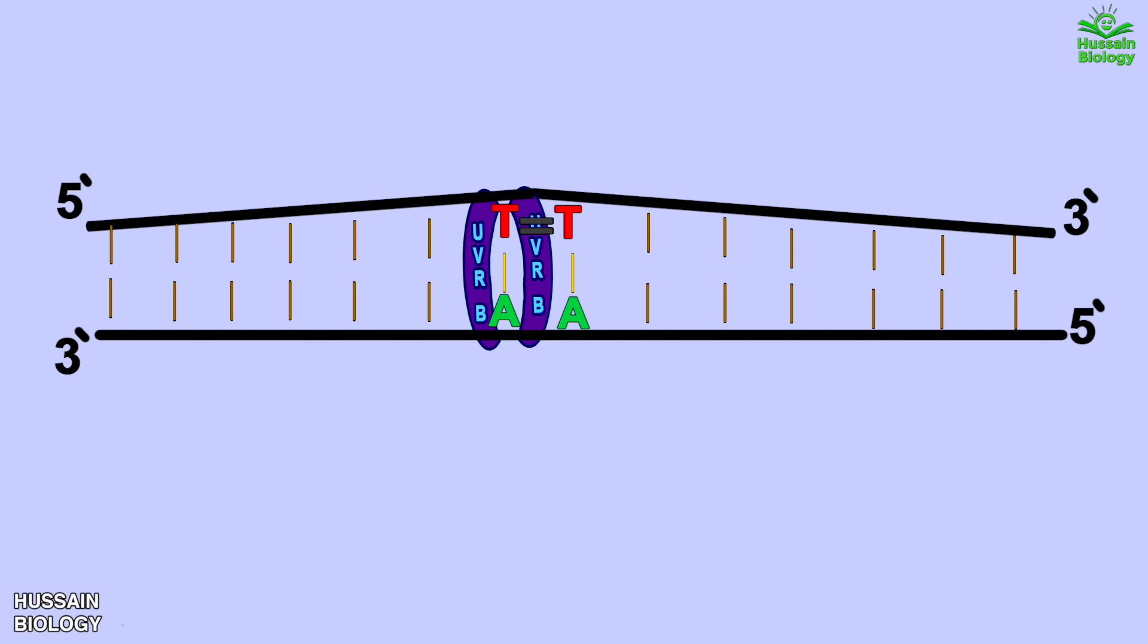Now we have only UVR B on the DNA. Then this UVR B recruits the UVR C which has dual incision activity on the DNA strand. This UVR B and UVR C complex is termed as ABC exonuclease. Although UVR A is absent here but still it's termed as ABC exonuclease because UVR A has initial activity in this process.